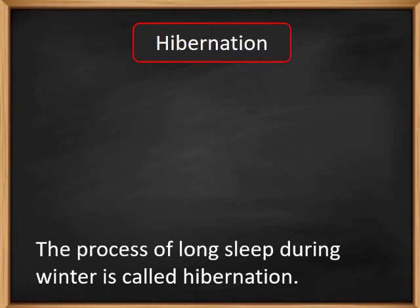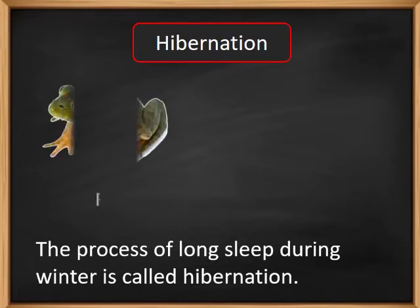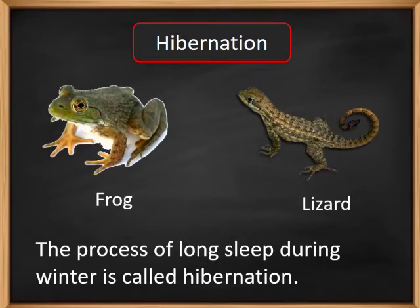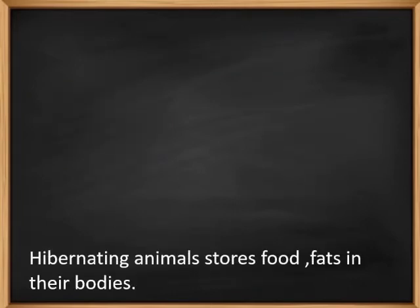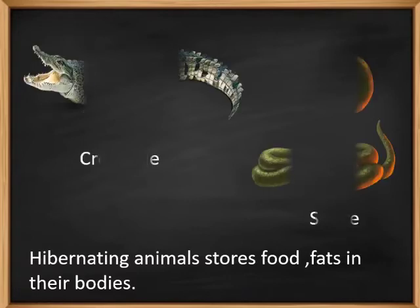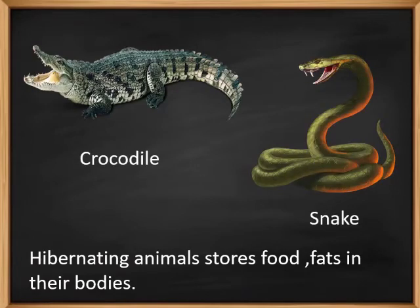Hibernation. The process of going for a long sleep during the winter season is called hibernation. Animals like frogs and lizards cannot bear the extreme cold, so they undergo a long sleep. Hibernating animals store food in their body, usually in the form of fats, which they utilize during their long sleep. Crocodiles and snakes are other examples of hibernating animals.